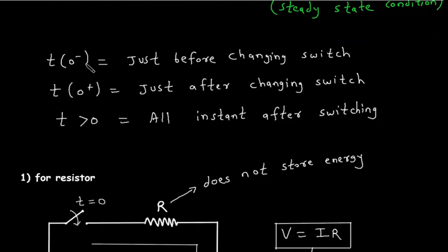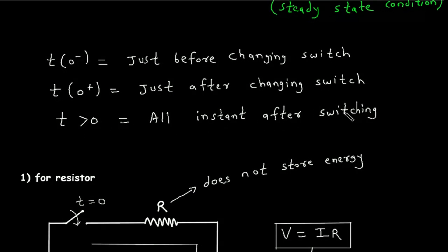t(0⁻) is the instant just before the switch changes, and t(0⁺) is the instant just after the switch changes. t greater than 0 refers to all instants after switching.